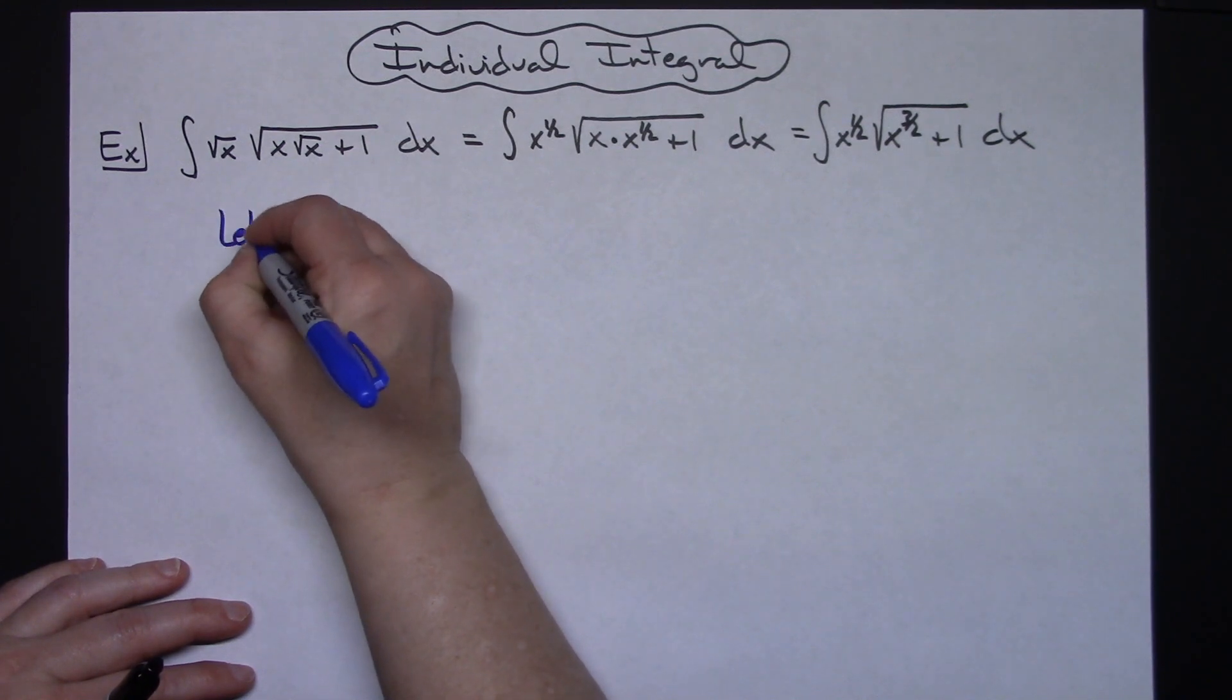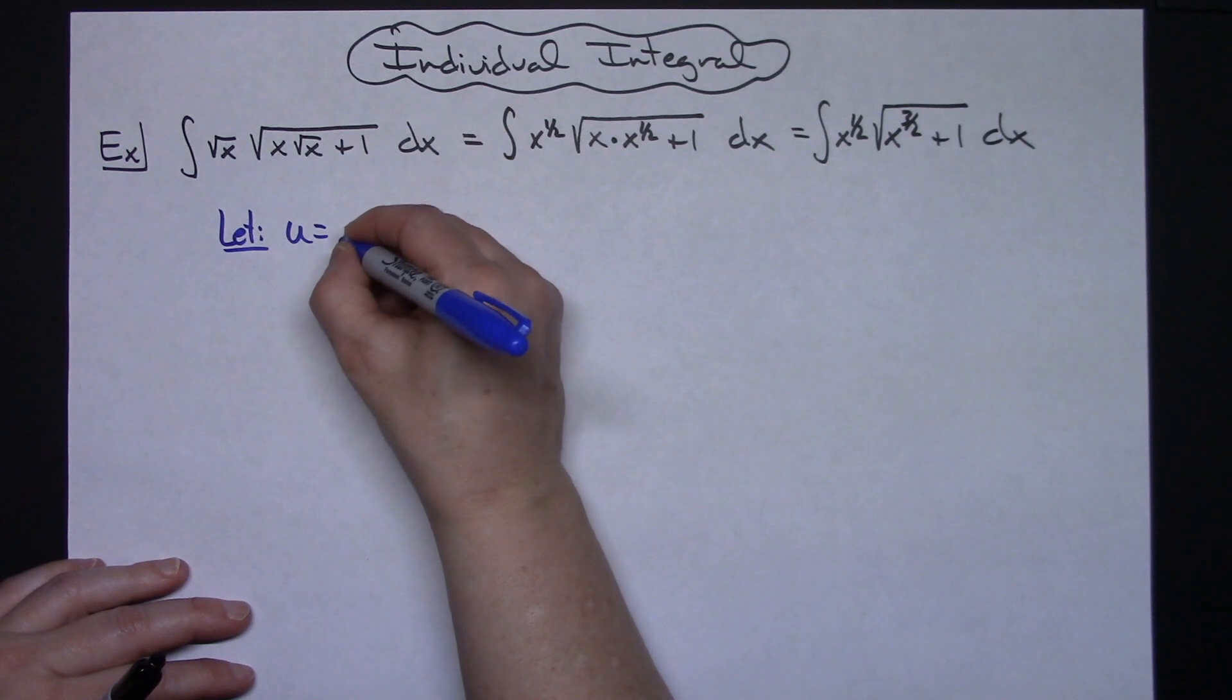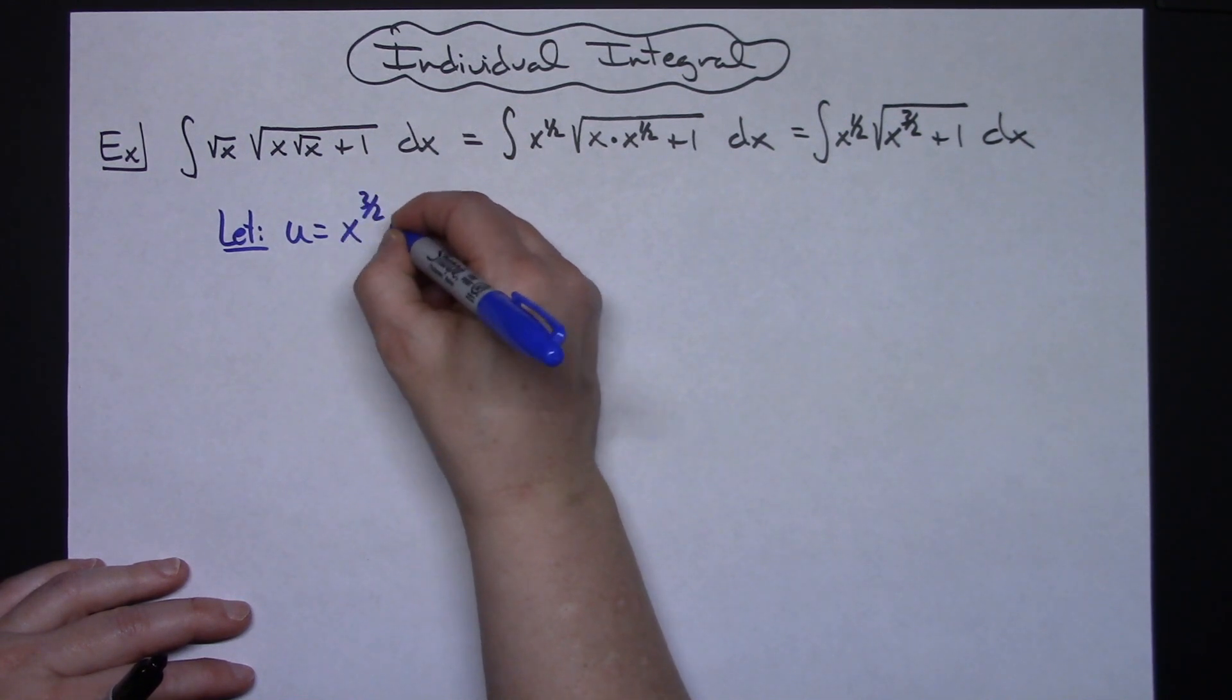Let's let our u be that inside function so u is going to equal x to the 3 halves plus 1.